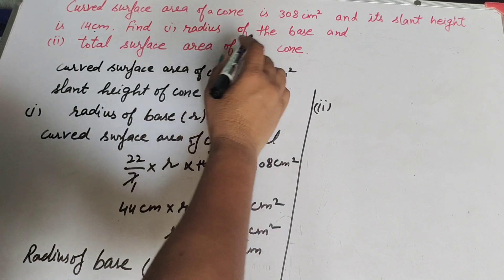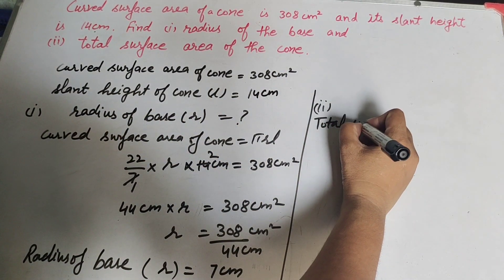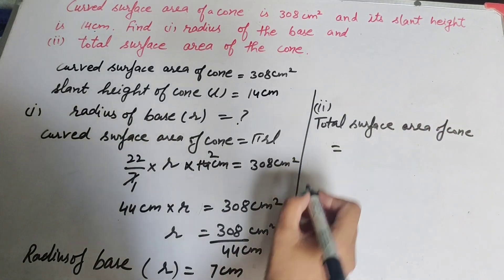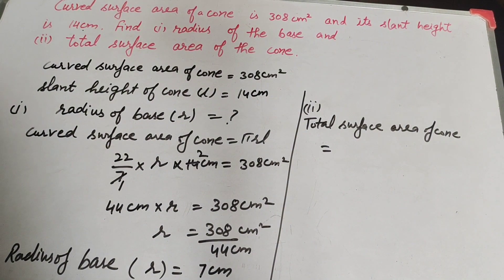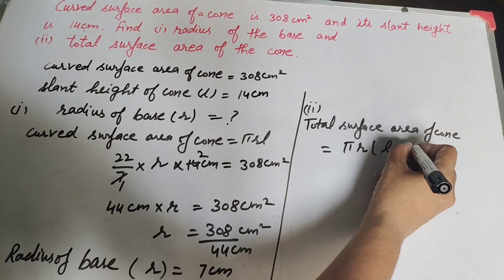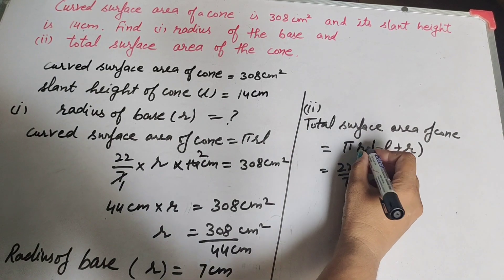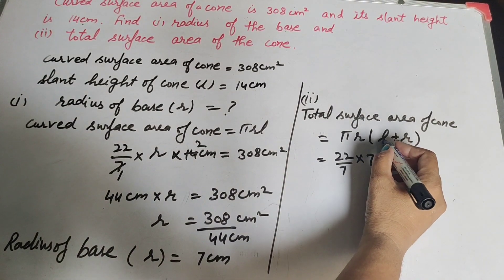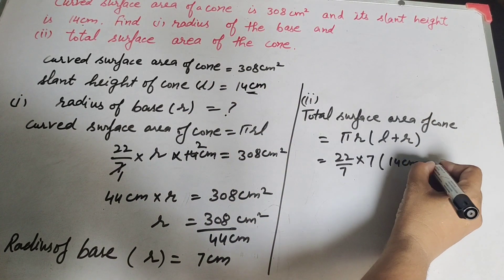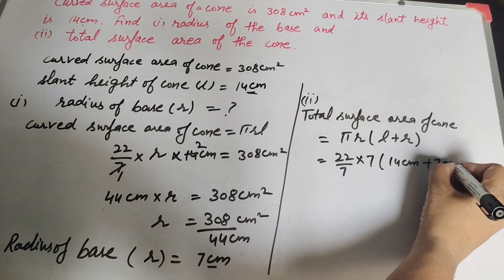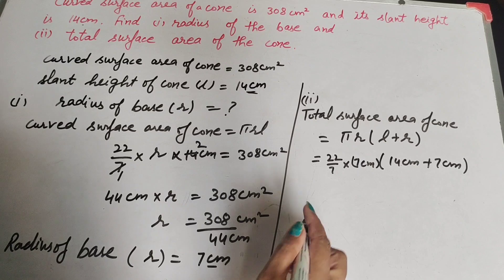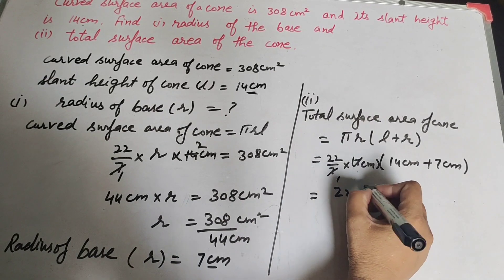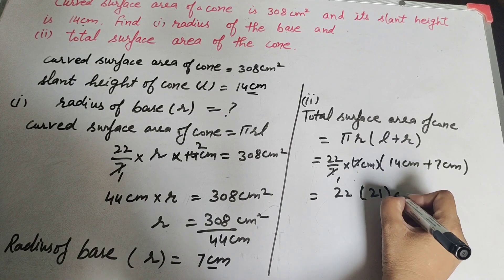We find the total surface area of the cone. The formula is TSA = πr(l + r), where π = 22/7, r = 7 cm, l = 14 cm. So TSA = (22/7) × 7 × (14 + 7). The 7s cancel, giving 22 × 21 = 462 cm².